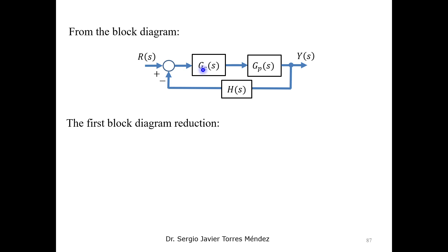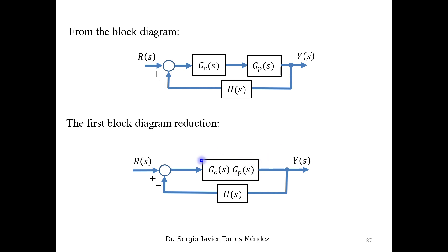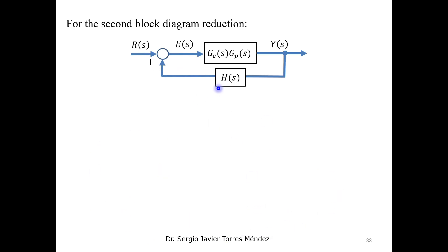We start with a block reduction — finding the multiplication between two diagram blocks to obtain a reduced block. We then identify the error variable e, which is the difference between the reference and the feedback signal.